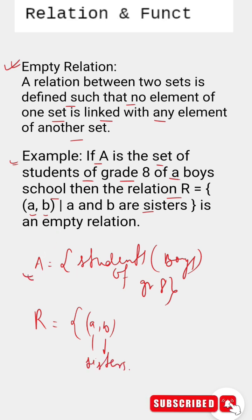Why? Because A is only students of a boys school, so A and B cannot be sisters. They have to be boys, so this particular relation is an empty relation, and an empty relation is defined by phi. Thank you and subscribe for more.